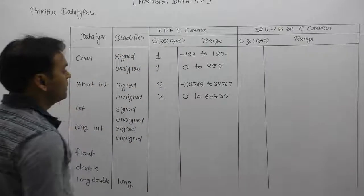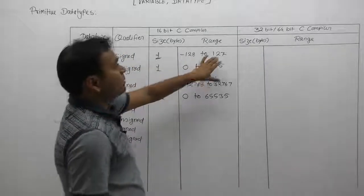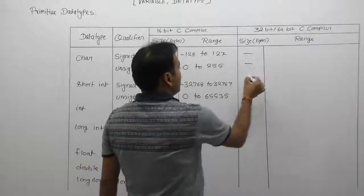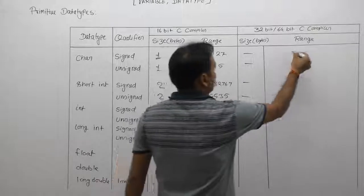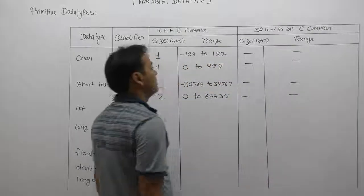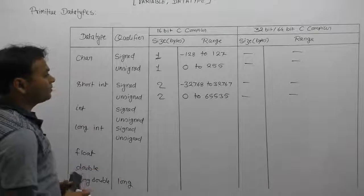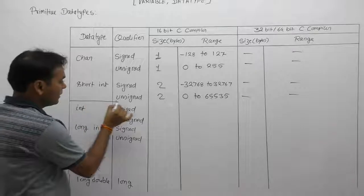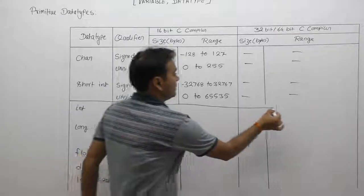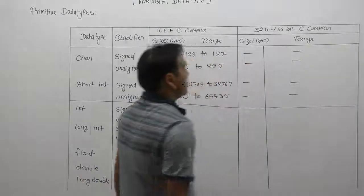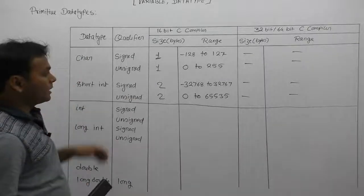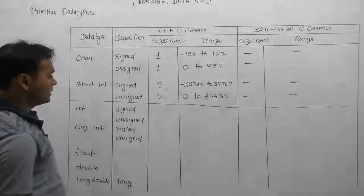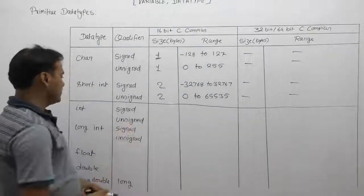We are not writing the behavior for 32-bit or 64-bit compiler separately for character types because it is the same as the 16-bit compiler. Character size is compiler independent — this is the behavior of character types. Next, we look especially at integer data types.